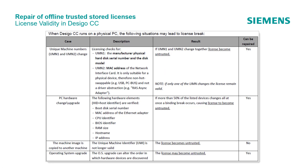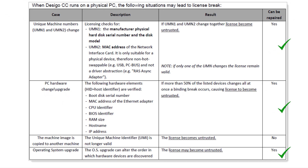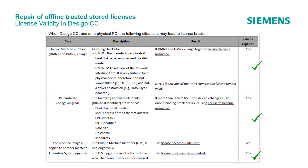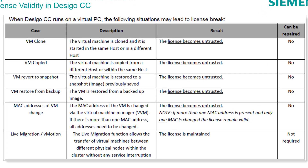The first table in this document refers to the case where the product runs on a physical machine, and in three cases the license can be repaired. The second table refers to cases where the product runs on a virtual PC and which of these cases can lead to a license that cannot be repaired. This information shows how important it is to return the license before performing such actions.